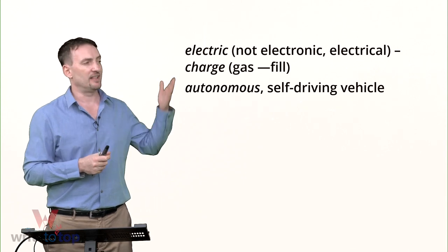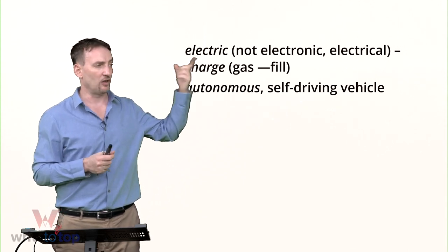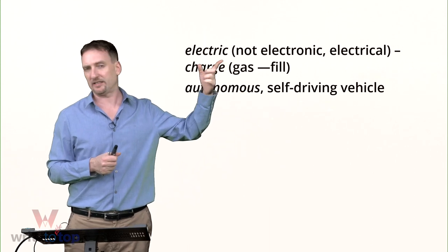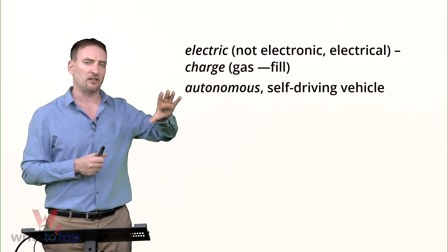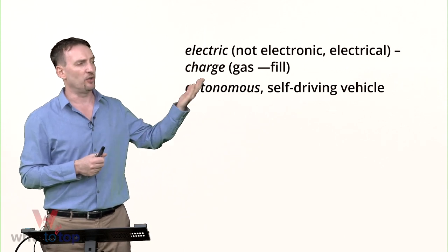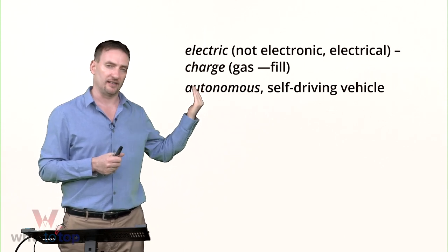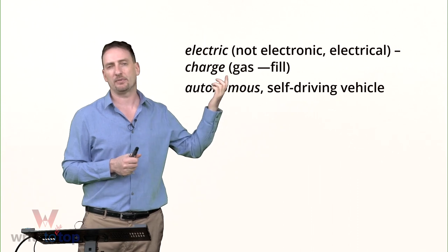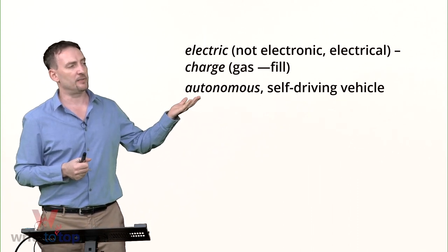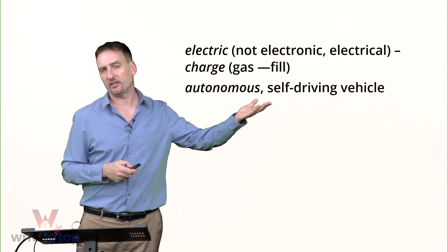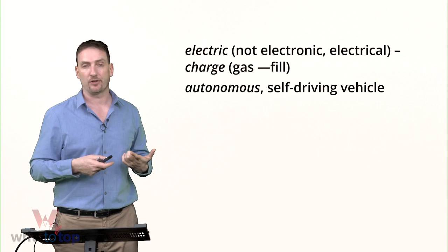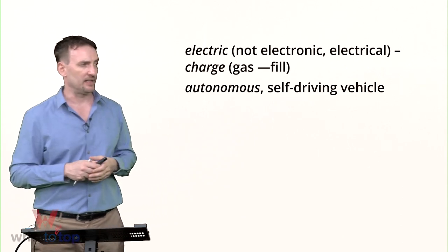Talking about cars — it's electric cars, not electronic cars and not electrical cars. I see this mistake quite often. If you're talking about a Tesla, that's an electric car — and you don't fill it, you charge an electric car. You fill up a gas car with gas. Autonomous cars and self-driving vehicles mean the same thing. Autonomous means working on its own power — it doesn't need someone else to control it.